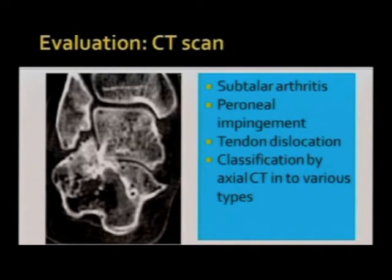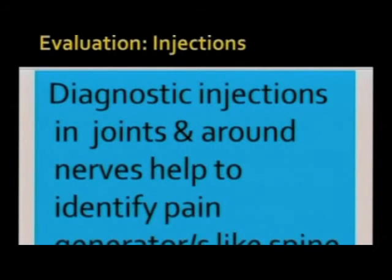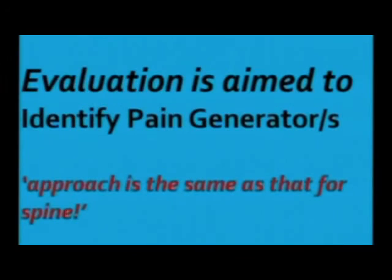CT scan is another important modality that tells you about arthritis of the subtalar joint, impingement of the peronei, and dislocation of the peroneal tendon, and you classify the malunion based on CT. In my practice, I use differential injections around joints, nerves, and tendons to identify pain generators — just as we do for a spine case. The evaluation is aimed at identifying pain generators with the same approach as for the spine.